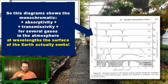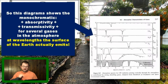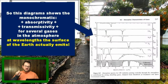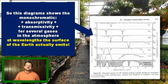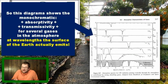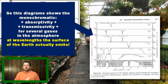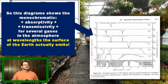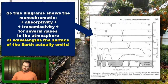This diagram shows the monochromatic transmissivity and absorptivity of different gases. When we zoom in, you'll see there's one panel for carbon dioxide, one for water vapor, one for methane, one for nitrous oxide, et cetera. These show the monochromatic absorptivity of each gas at wavelengths that the surface of the Earth actually emits — so over the range of wavelengths the Earth really does emit, which gases in the atmosphere are absorbing radiation at those wavelengths, and acting like greenhouse gases.